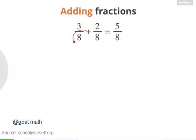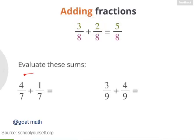You might have noticed these two fractions have the same denominator, and that's the same denominator as the sum over here. And the numerator of the sum turns out to be the sum of the numerators of the two fractions you're adding together. Try using this trick to evaluate a few more sums. What's 4 sevenths plus 1 seventh and 3 ninths plus 4 ninths?